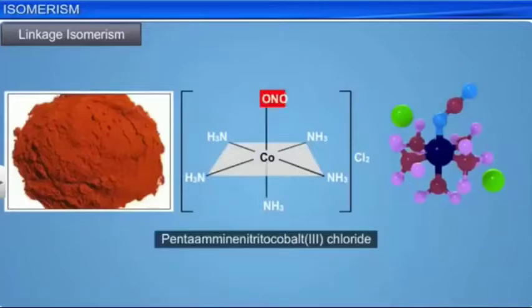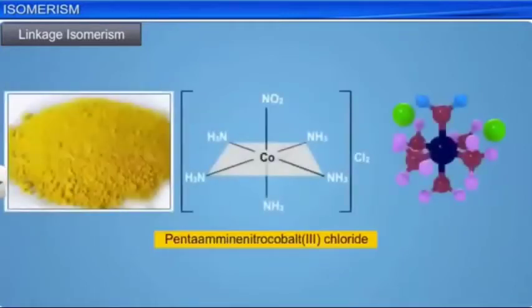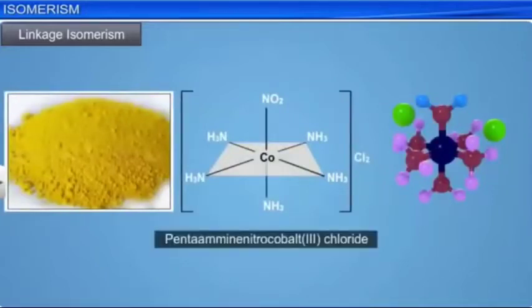Similarly, the thiocyanate ligand, SCN, may bind to the metal through sulfur to give complexes of the type M-S-C-N, or through nitrogen to give M-N-C-S type of complexes.